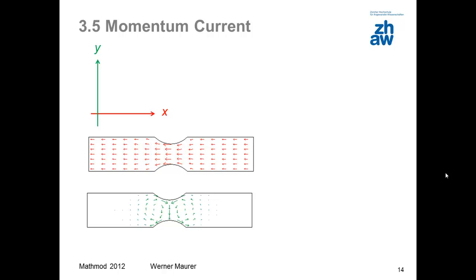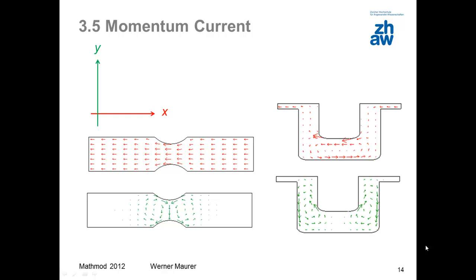Such momentum flows can be displayed visually. This diagram shows the momentum flows in a steel plate under tensional stress. At the top, you can see momentum flow x flowing in negative direction. In the narrowed section, the diverted momentum flow x causes eddy currents of the y component. If the momentum flow is forced to go a longer way, the eddy currents become stronger.